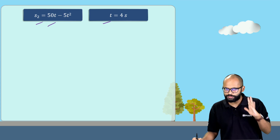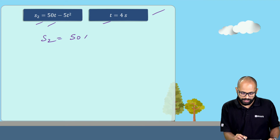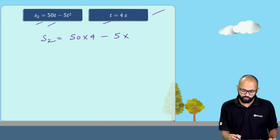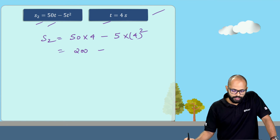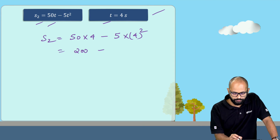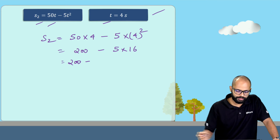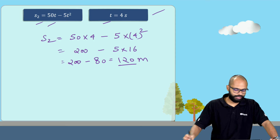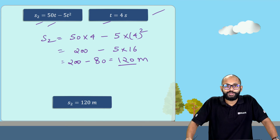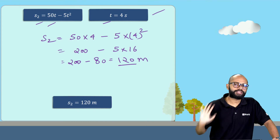To find the height from the ground where the balls hit each other — that means from Kevin, who was on the ground — we use s2 = 50t − 5t², which we already found, and t = 4 seconds. So s2 = 50×4 − 5×4² = 200 − 5×16 = 200 − 80 = 120 meters. The meeting point is 120 meters above the ground.